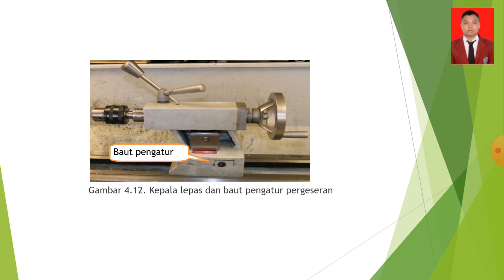Selanjutnya, ini gambar baut kepala lepas dan baut pengatur pergeseran. Fungsinya untuk baut pengatur ini mengatur kesepusatan center. Ada dua baut kanan dan kiri. Apabila baut yang kanan dikencangkan, yang kiri harus dikendurkan dan sebaliknya.